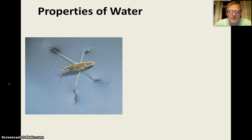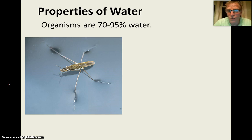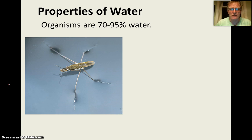In this video, we're going to talk about the properties of water. First off, why is water important in terms of life? Well, organisms are 70 to 95% water, so we're basically a big watery solution. Our blood is a solution of all the important nutrients we need being carried by water.